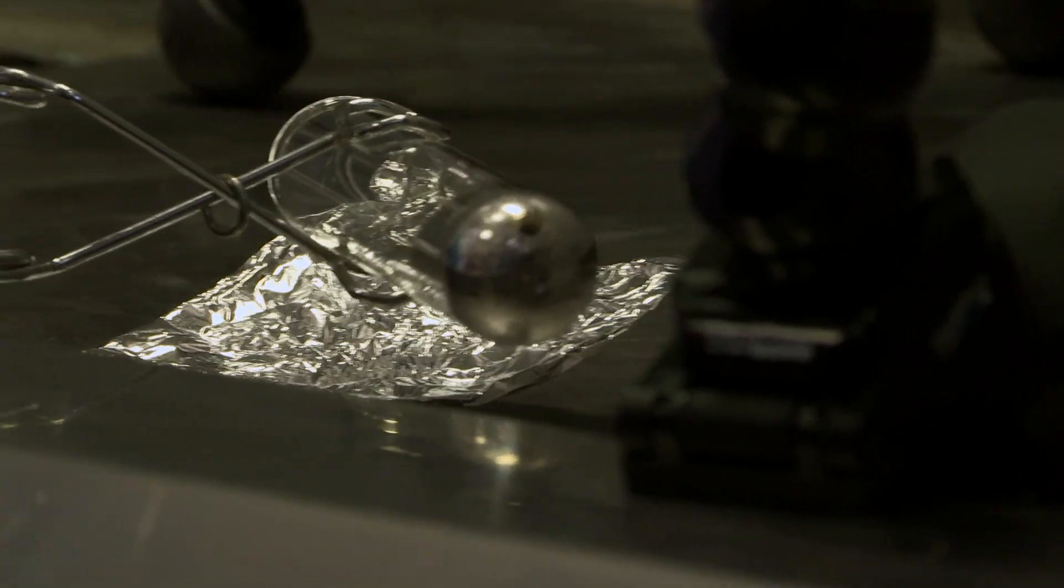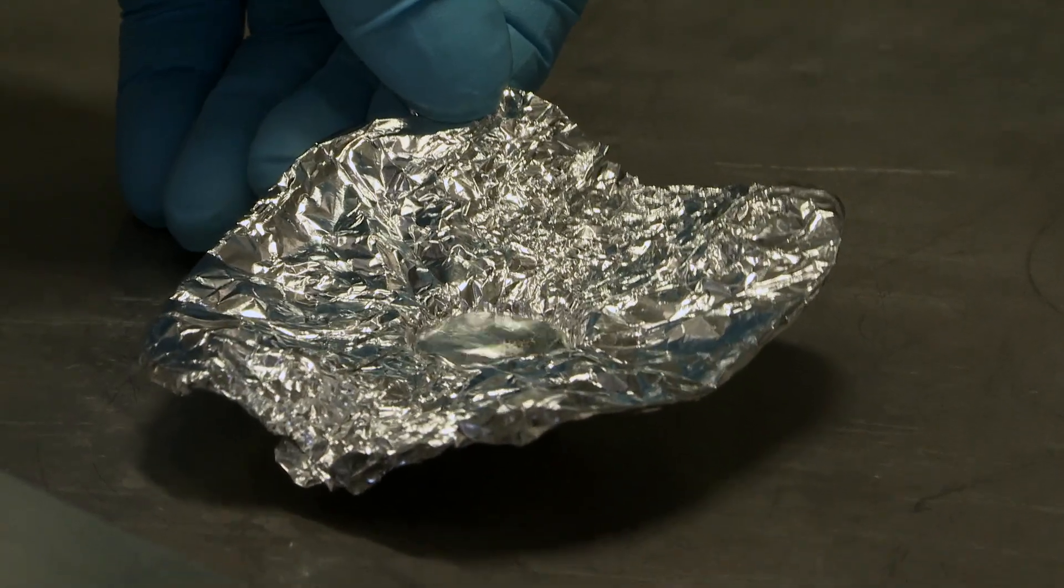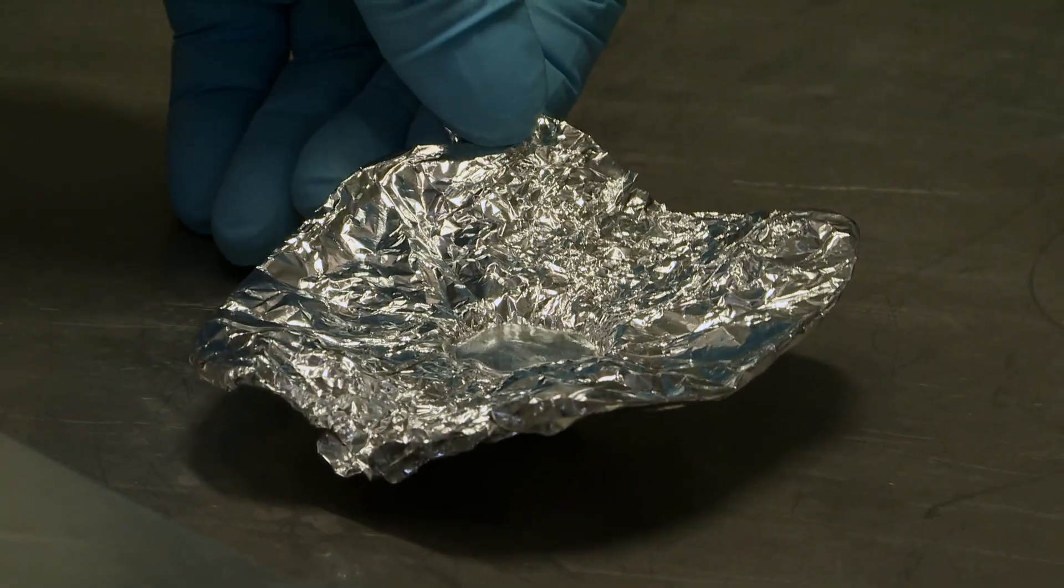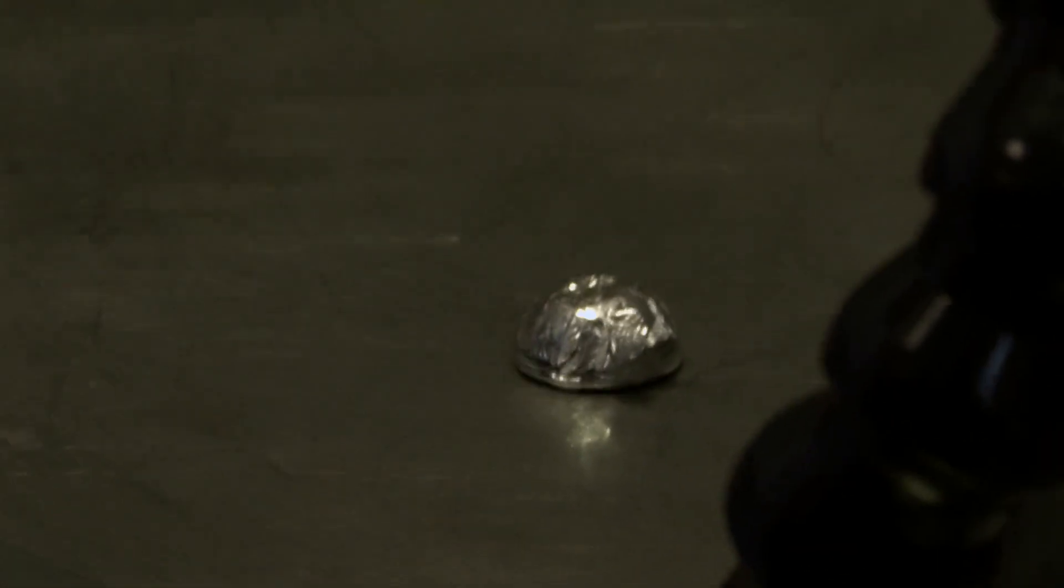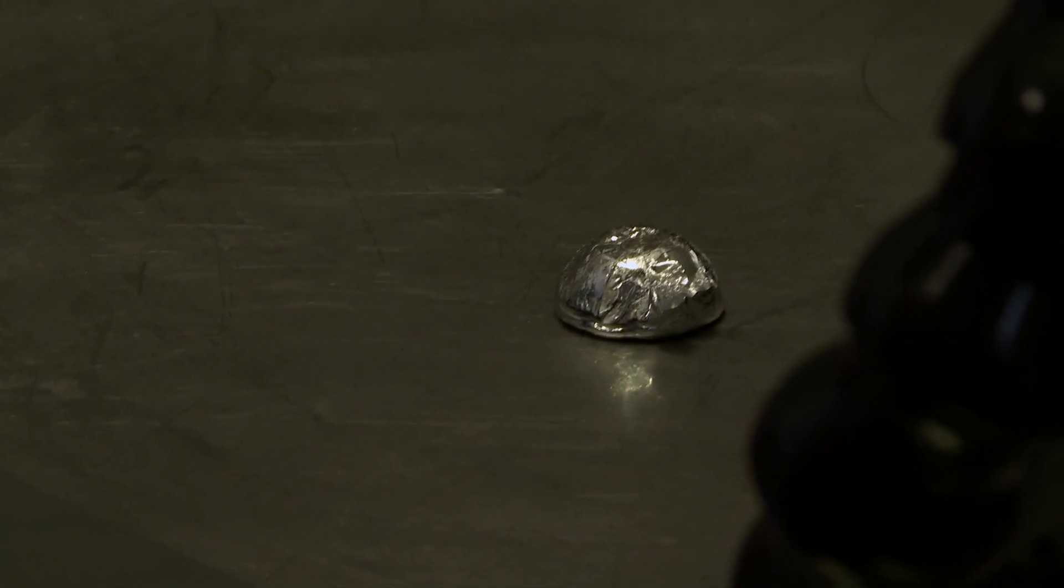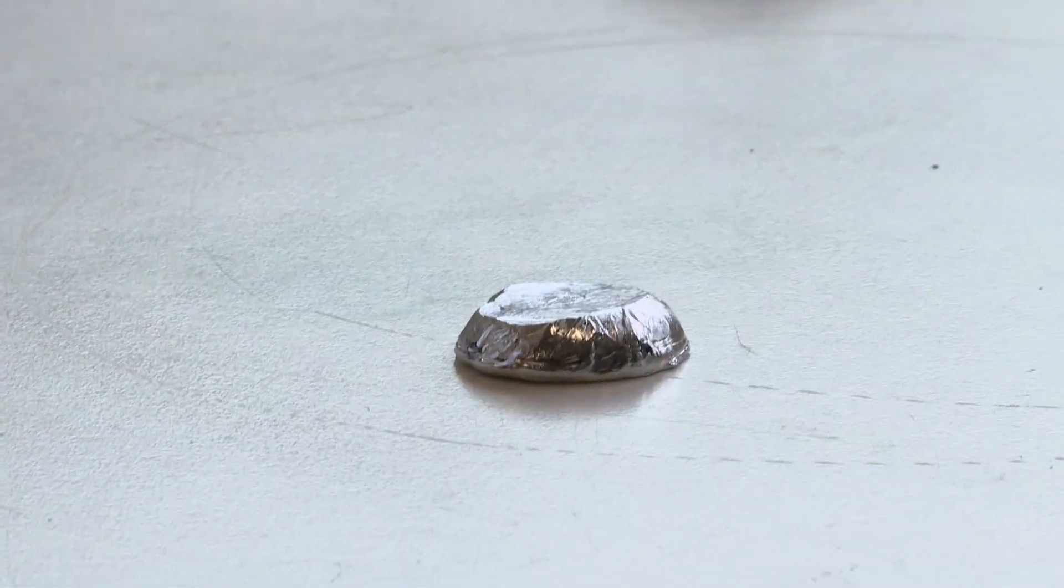And then when it melted, he thought it was a pity to waste the liquid metal. He poured it into a little mold, and made a sort of hemisphere of indium. And once he'd got it out, being Neil, he couldn't resist the hammer again. And so he hammered it again, almost flat.